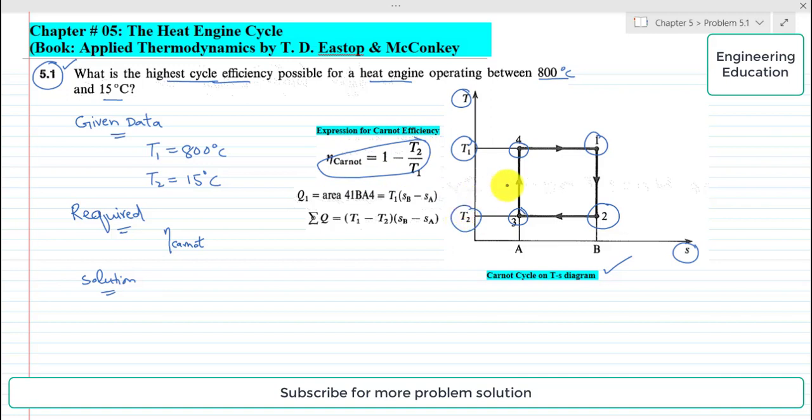And it is derived from the TS diagram. This Q1 is actually the gross heat, and it is the area under the curve 4-1-2-B-A and 4. So this whole area represents Q1 and it is the gross heat. Similarly, this is the net heat, T1 minus T2, this is the difference of this temperature and this temperature.